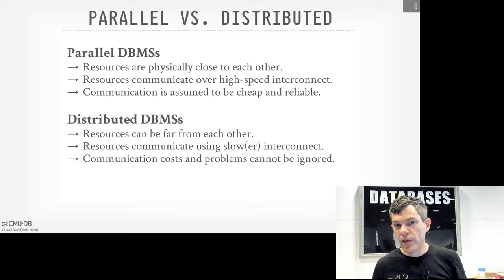For example, in the grace hash join, in the first phase we generated buckets for the build side and probe side so we can bring things sequentially into memory and do joins for just the matching buckets. Now you can think of the buckets after partitioning as being processed independently by different workers at the same time. Worker one can do the first level of the hash table and doesn't need to coordinate with other workers processing other buckets, because we've already divided things up. Basically all the divide and conquer stuff we talked about before can be applied here, but now we just run things in parallel.